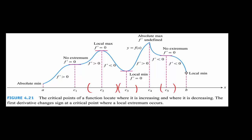Once you have all the local min and max values, if the function is continuous on a closed interval, you can find the absolute minimum and absolute maximum among all the local extreme values.